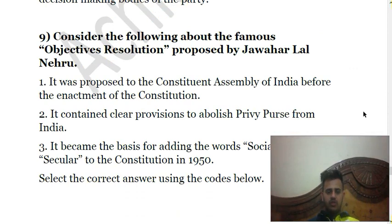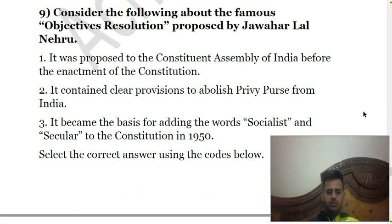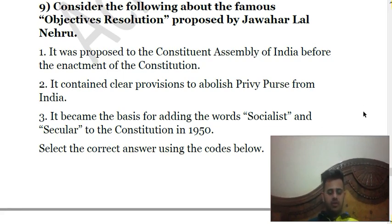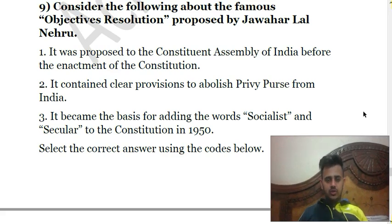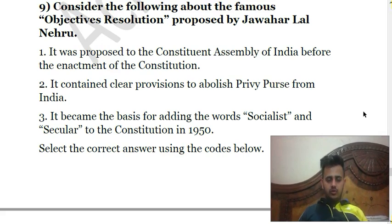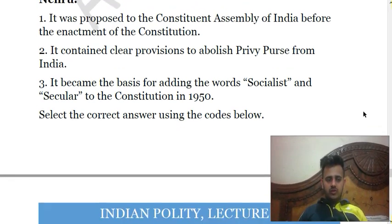The ninth question asks us to consider the following about the famous Objective Resolution proposed by Jawaharlal Nehru. First, it was proposed to the Constituent Assembly of India before the enactment of the Constitution. Second, it contained clear provisions to abolish privy purses from India. Third, it became the basis for adding the words 'socialist' and 'secular' to the Constitution in 1950. Only the first statement is correct. The second is incorrect because there was no such provision regarding privy purses. The third is also incorrect because the words 'socialist' and 'secular' were added by the 42nd Amendment — they have no direct relation to the Objective Resolution. The Objective Resolution was intended to give insight into the broad framework within which the Constitution would be framed. The answer is A — first only.